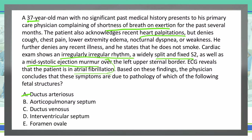Option B, the aorticopulmonary septum, is what separates the aorta and the pulmonary trunk. That won't cause any of the things we're seeing in this vignette, so that's not an option either. The ductus venosus is a vessel between the portal circuit and the inferior vena cava, so it's not even in the heart area — therefore not something to consider.